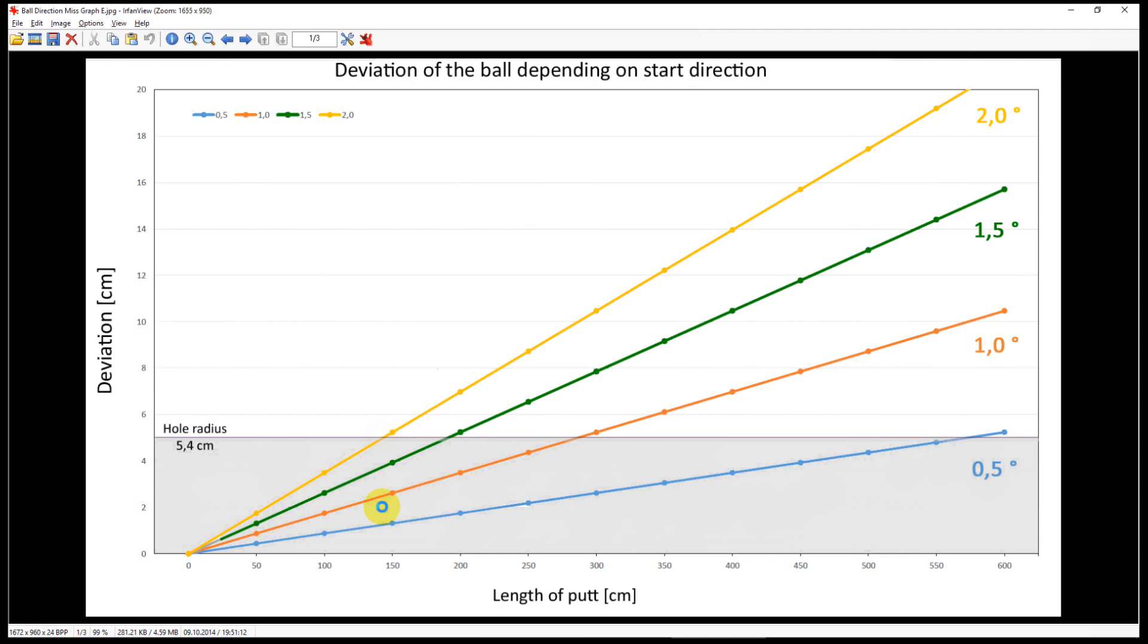At 2 degrees off line, you would start missing the hole if the hole is at a distance of 1.5 meters.